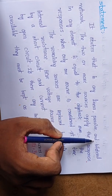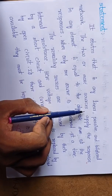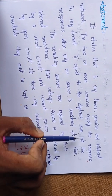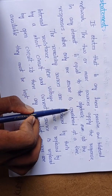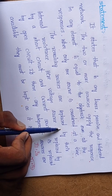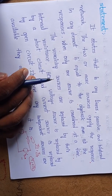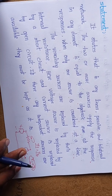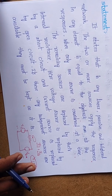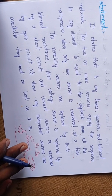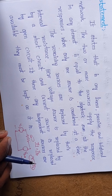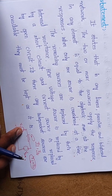Again, it states that in any linear, passive, and bilateral network, when two or more sources are applied, the response in any element is equal to the algebraic sum of all the responses when only one source is considered at a time. The remaining sources are replaced by their internal resistances. Internal resistance means: if it is a voltage source, it is replaced by a short circuit; if it is a current source, it is replaced by an open circuit.